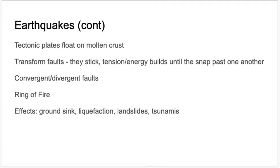You can also get earthquakes at convergent and divergent faults, and those earthquakes are often associated with volcanic activity specifically. We have a hard time predicting earthquakes, but we have a good idea of where they might happen. We don't know when they'll occur, which is difficult because it's hard to warn people — which is why there are often high death rates. But knowing where they might happen tells us where we should have better building codes.